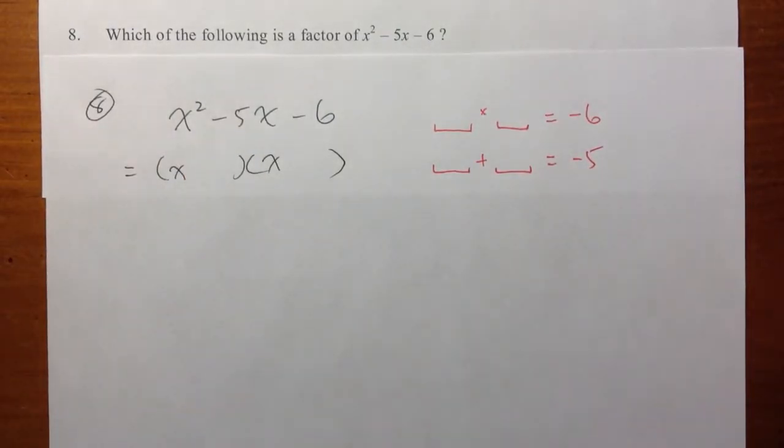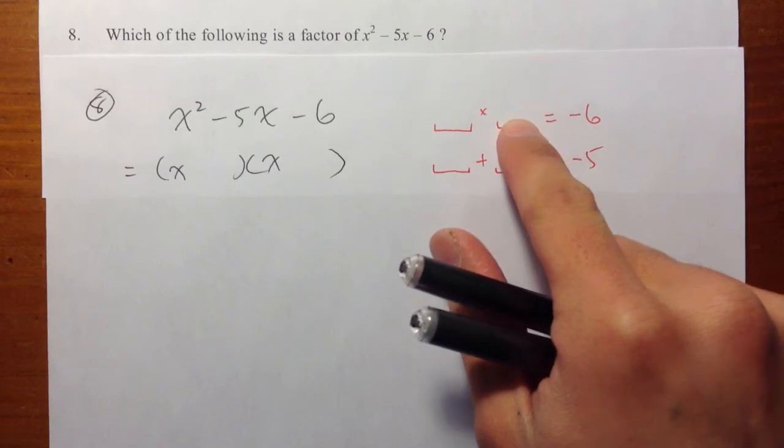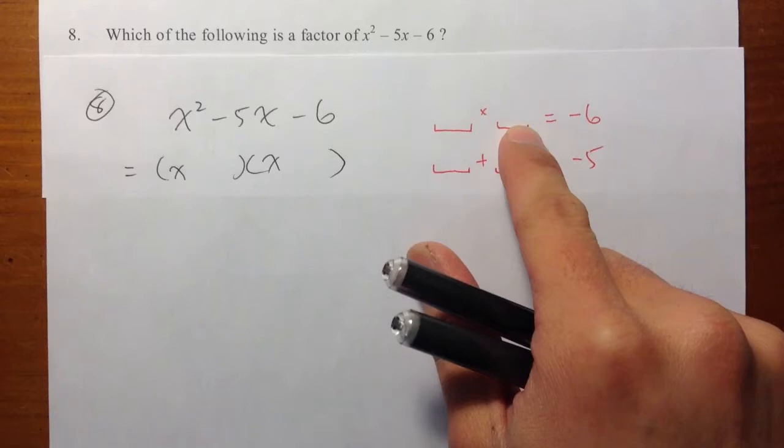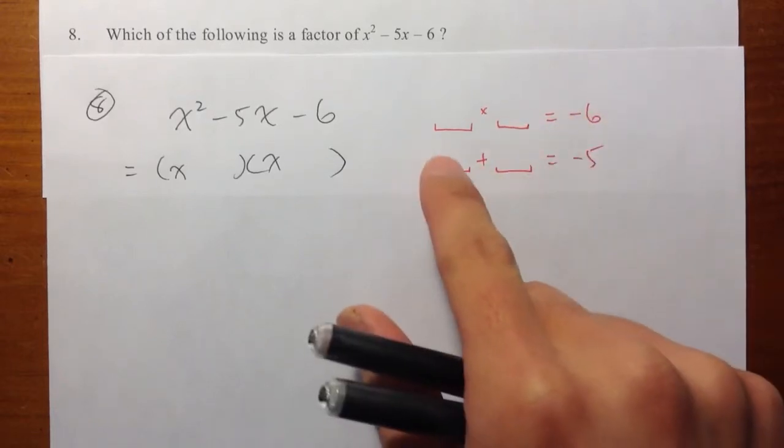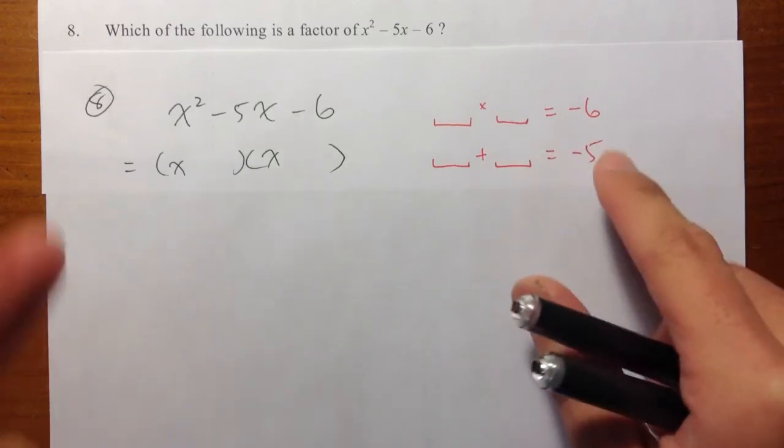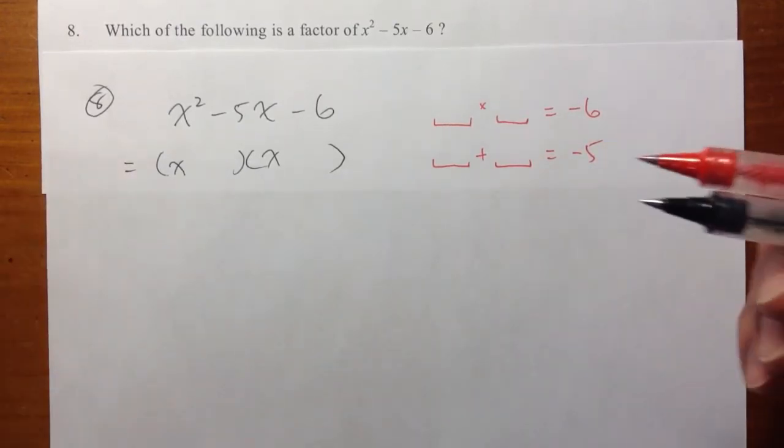You can run through all the possibilities. Let's say negative 2 and positive 3. That will work, right? Negative 2 times positive 3 will be negative 6. However, negative 2 plus positive 3 will be positive 1, which is not equal to negative 5. You can just run through these combinations.